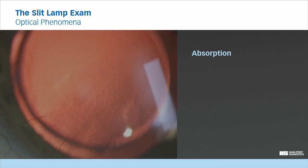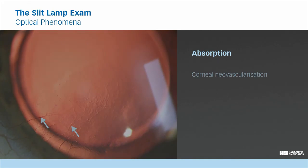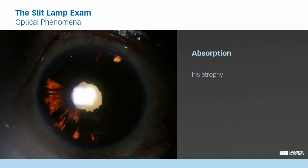During slit lamp examination, this phenomenon can be used for assessing subtle changes. In this case of corneal neovascularization, it allows to distinguish perfused vessels from empty vessels. Or it can demonstrate an iris atrophy by trans-illumination.